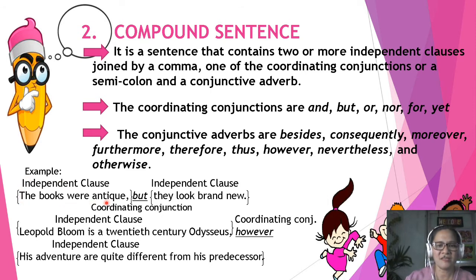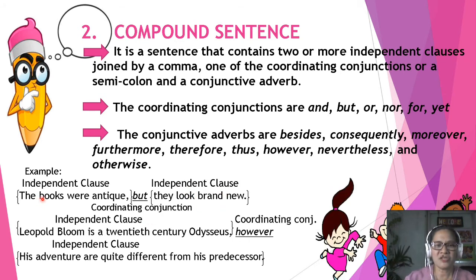The books were antique, but they look brand new. The independent clause here is 'the books were antique.' The word 'but' is a coordinating conjunction. 'They look brand new' is another independent clause. The two independent clauses are joined by a coordinating conjunction.